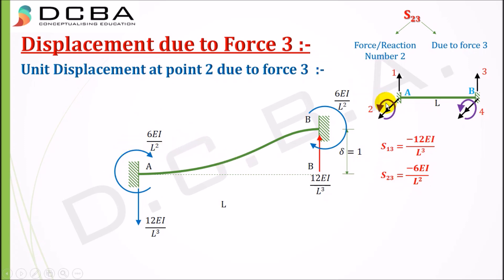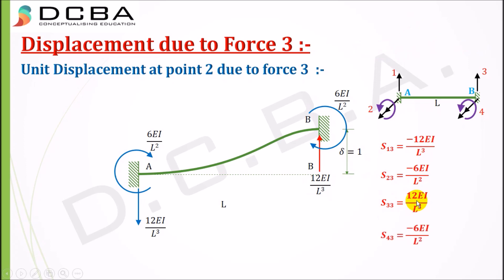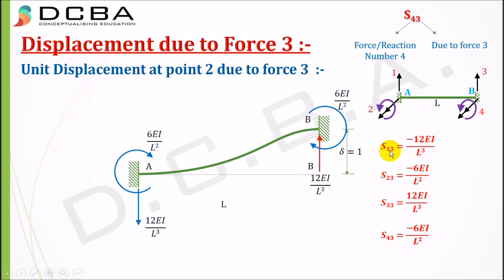S33 is +12EI/L³ — force or reaction at position three due to force three. The reaction is upward and positive. S43 is −6EI/L² because the positive direction for position four is anti-clockwise, but here it gives a clockwise moment of 6EI/L², hence negative. This completes the third column of the stiffness element matrix.